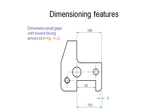Here's an example where we've dimensioned a hole. The symbol with a circle and a line through it represents a diameter — that's the shorthand we use for a circular diameter. Due to the size and surrounding features, we've put the dimension with arrows pointed inward and projection lines showing which hole it relates to. Another acceptable option is to have the arrows on the outside of the diameter with the measurement on the inside of the circle.